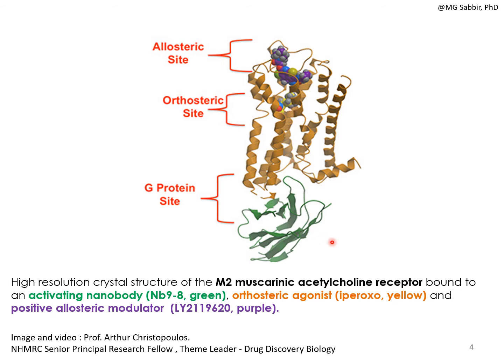LY2119620 is termed a positive allosteric modulator, meaning its binding at the allosteric site positively influences endogenous ligand binding at the orthosteric site and subsequent signal transduction. For example, the orthosteric agonist iperoxo alone initiates cyclic AMP production, but adding the positive allosteric modulator LY2119620 along with iperoxo enhances cyclic AMP production further. Conversely, a negative allosteric modulator bound to the allosteric site would inhibit cyclic AMP production through iperoxo binding.